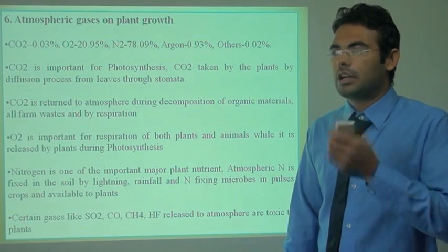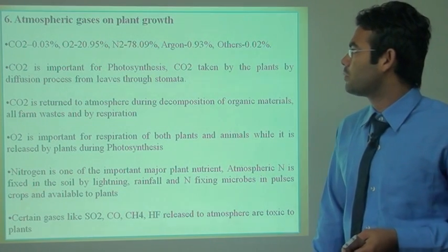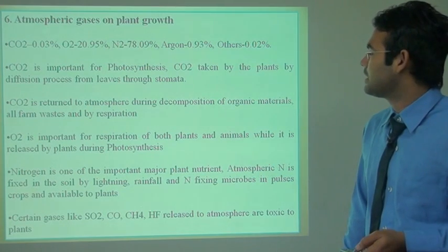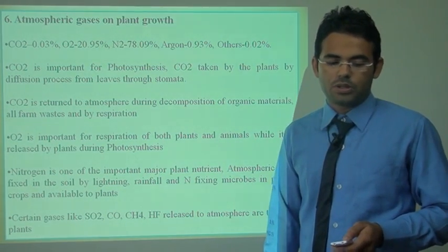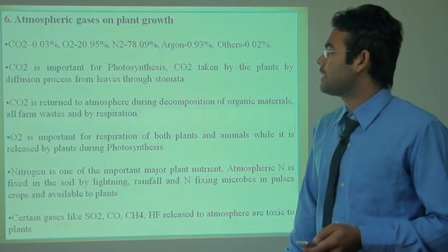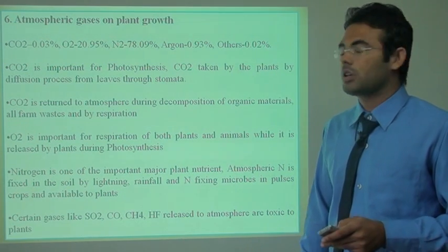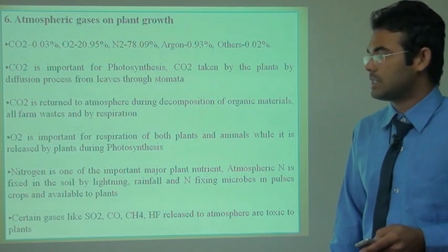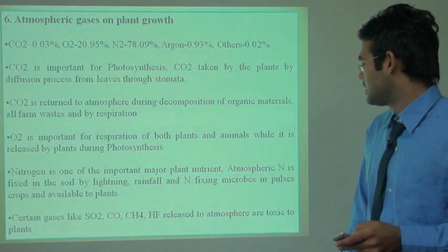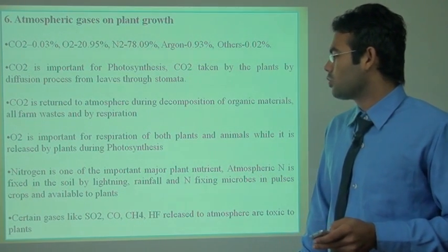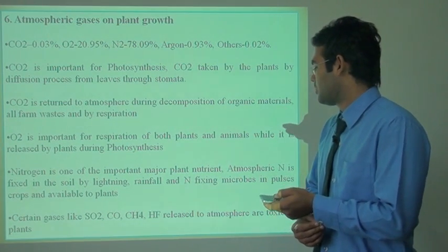The sixth climatic factor is atmospheric gases. In the atmosphere, CO2 is 0.03%, O2 is 20.95%, nitrogen is 78.09%, argon is 0.93% and other gases 0.02%. CO2 is important for photosynthesis in plants and is taken up by plants through diffusion from the leaves via stomata. CO2 is returned to the atmosphere during decomposition of organic matter, farm waste and by the respiration process. Certain gases like SO2, CO4, CS4 and HF released into the atmosphere are toxic to plants.